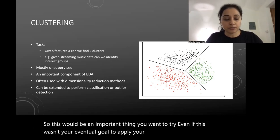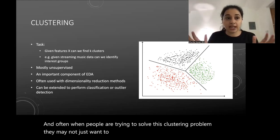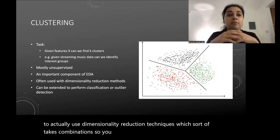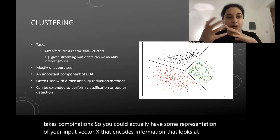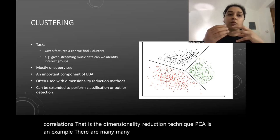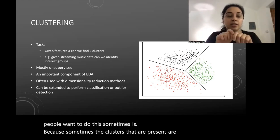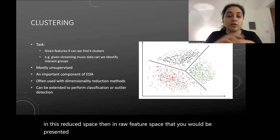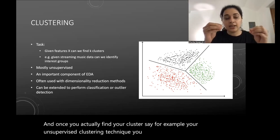When people try to solve clustering problems they may want to use dimensionality reduction techniques, which take combinations of input features — like PCA — to create a lower-dimensional representation that encodes correlations. Sometimes the clusters present in the data are more evident in this reduced space than in the raw feature space. Once you find your clusters via unsupervised techniques, you can take the resulting labels and turn the problem into a classification task.